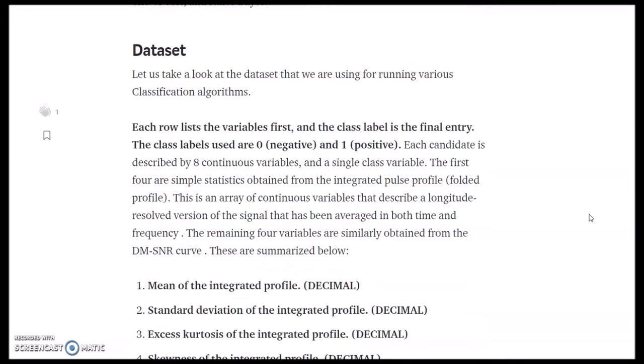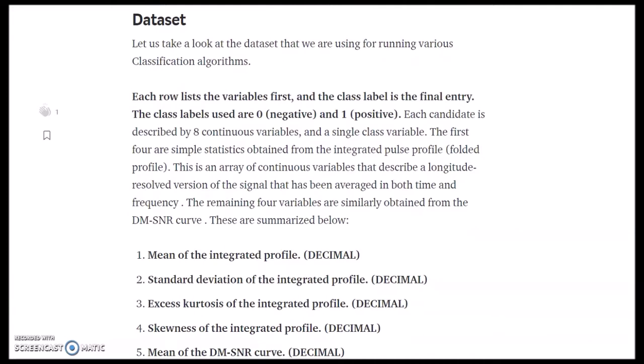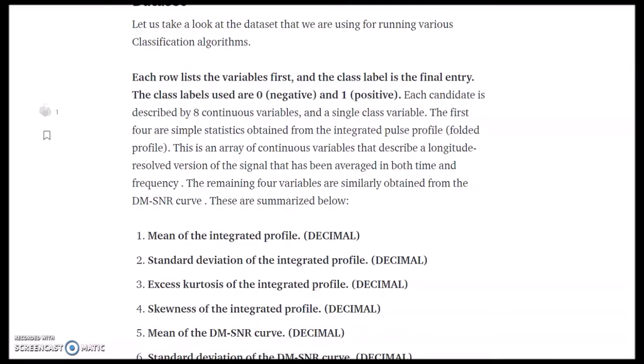Now let's have a look at the dataset. We use the dataset provided by the Kaggle website. The dataset contains about 16,000 spurious examples in which about 1,700 are real pulsar examples. Each row lists the variables first. The class labels used are 0 for negative and 1 for positive. Each candidate is described by 8 continuous variables and a single class variable.